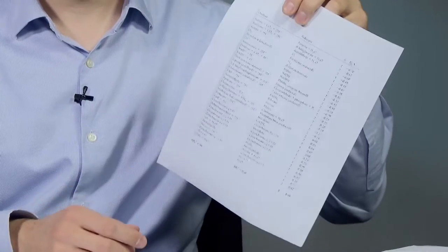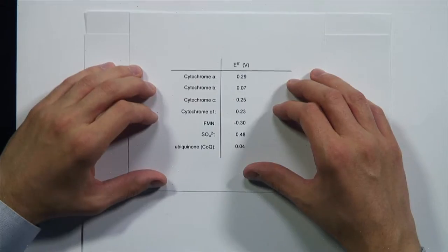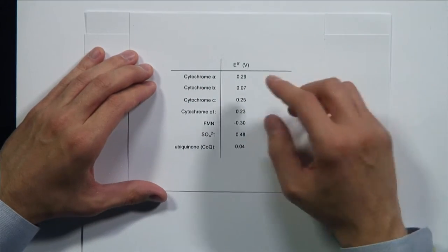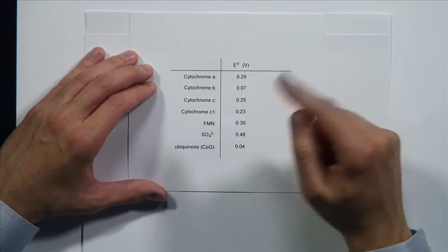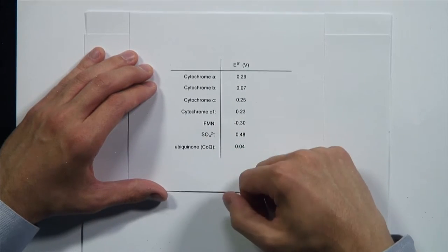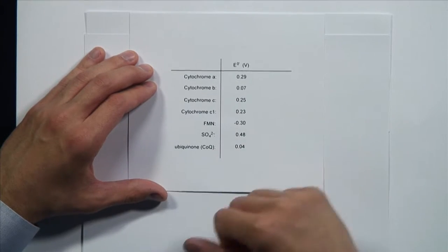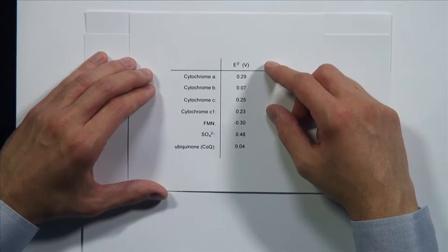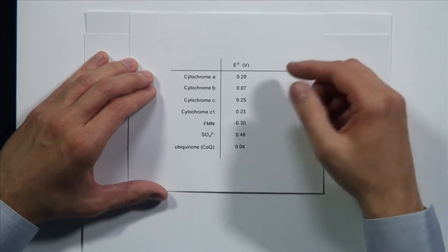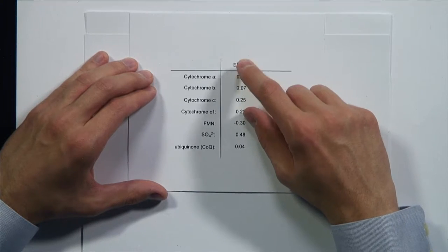Part A of this problem asked us to write the order of the electron carriers as they would function in an electron transport chain for this organism. The problem provides a table with the electrochemical reducing potentials. I've selected the ones mentioned in the problem into a smaller table. We're dealing with cytochrome A, B, C, C1, flavin mononucleotide, sulfate (the final electron acceptor), and ubiquinol.